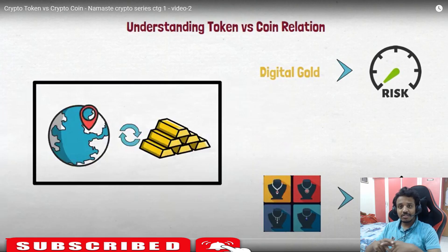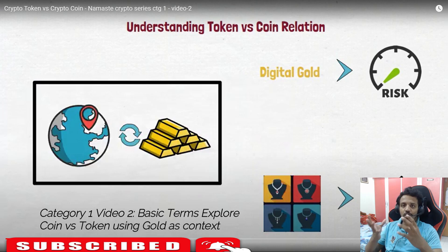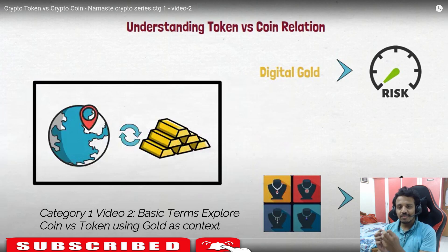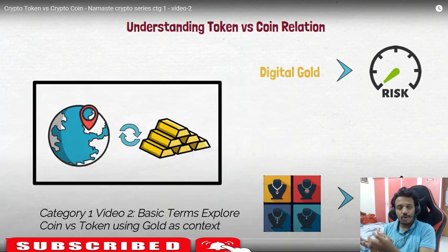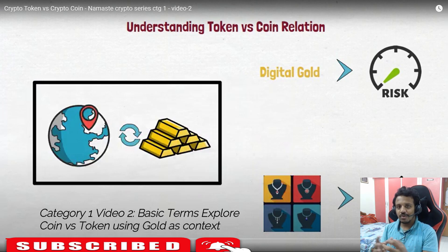Welcome to the crypto series. Today is category one, exploring basic terminologies, part two. In this video we are going to explore tokens and coins. We are going to use the context of digital gold, 24 karat gold, and 22 karat gold to understand what a blockchain is and how it relates to a crypto coin or token — coin versus token.